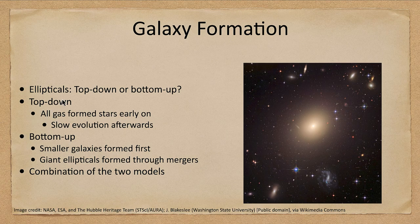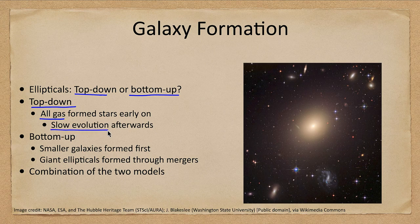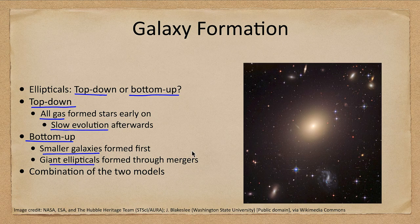How do galaxies form? Do they form top-down or bottom-up? Top-down means that all the gas formed stars early on and nothing much happened — just a very slow evolution, essentially a great burst of star formation billions of years ago, and then the stars just go through their lives. All the gas is used up so no further stars would form. Bottom-up formation means that smaller galaxies formed first and then giant ellipticals formed through mergers of these smaller galaxies.